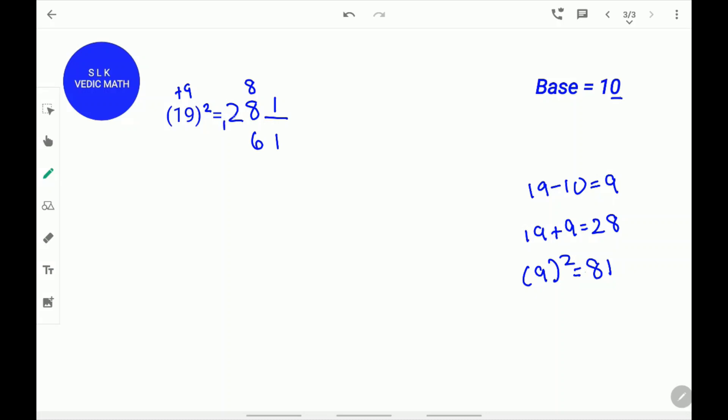Next, add 2 plus 1. 2 plus 1 is 3. So, the answer for 19 square is 361.